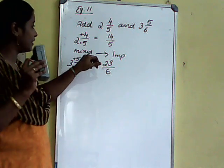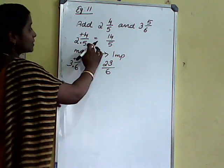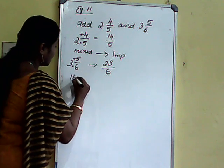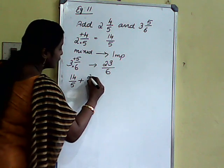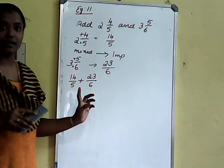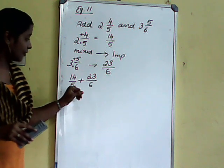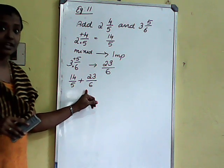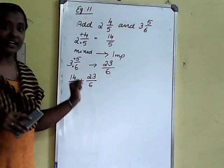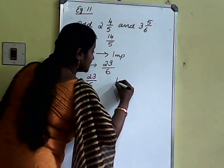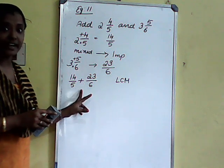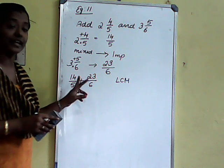In your textbook it is a different procedure, so please continue this procedure. First we want to convert the mixed fractions to improper fractions — 14 by 5 and 23 by 6. We want to add these. In previous modules we discussed how to solve unlike fractions under addition. Here the denominators are different, so this is an unlike fraction. What we do here is find the LCM, because we want to convert these two fractions into like fractions. That is why we find the LCM.